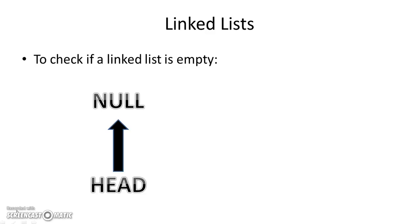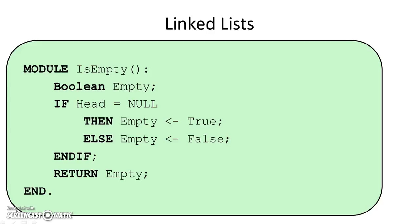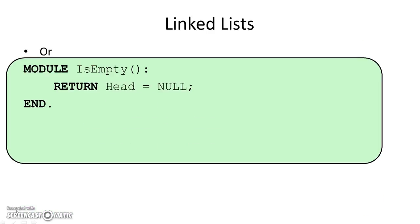To check if a linked list is empty, it's empty if the head points to null. We can either say: if head equals null then empty is true, else empty is false — or simply return head equals null. If head is null it returns true; if head is not null it returns false.